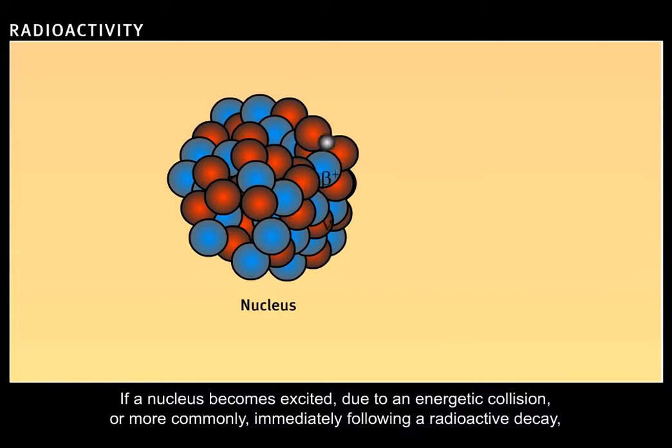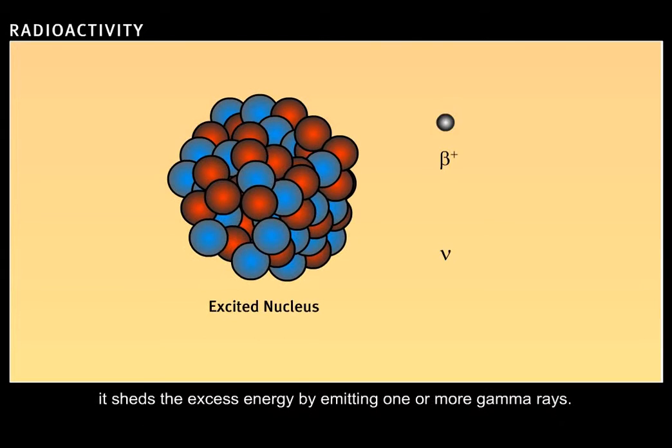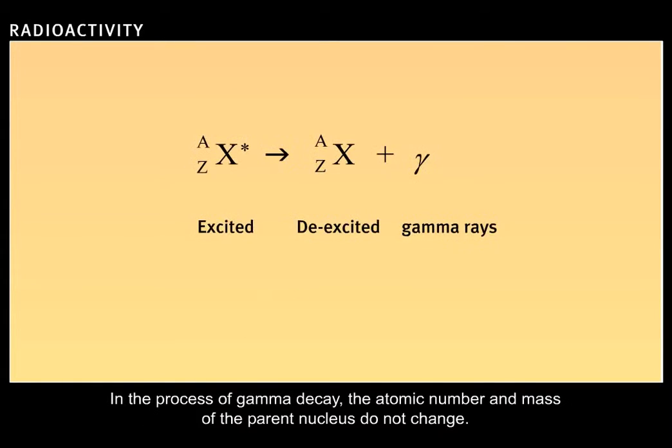If a nucleus becomes excited due to an energetic collision, or more commonly, immediately following a radioactive decay, it sheds the excess energy by emitting one or more gamma rays. In the process of gamma decay, the atomic number and mass of the parent nucleus do not change.